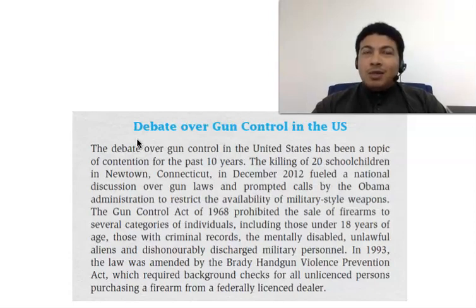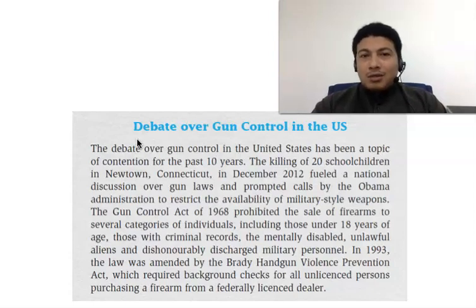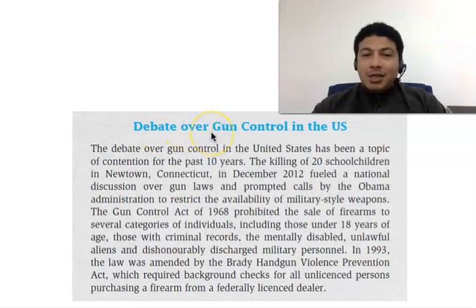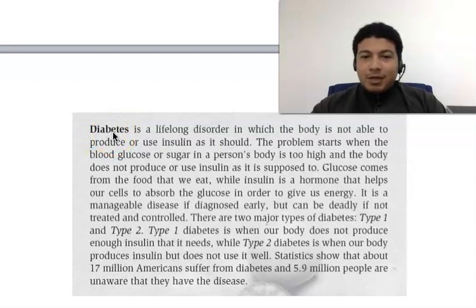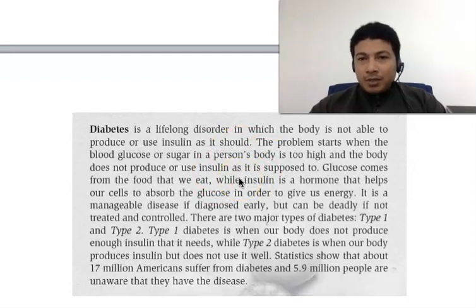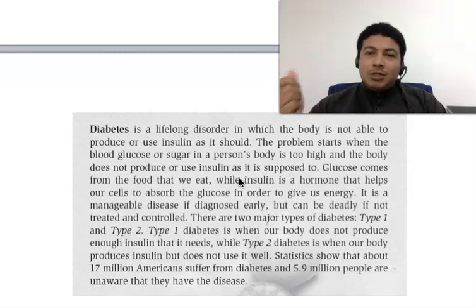Once we know what the topic is, we can try to identify the stated main idea and the implied main idea. But not all paragraphs or articles have their own topic in a heading like this. For example, this paragraph — the topic is shown as a bold word. We can easily know that this paragraph talks about diabetes. The first step to understanding a paragraph or an article is by knowing what the topic is, because that will help us know generally what the paragraph is talking about.